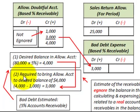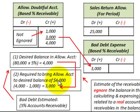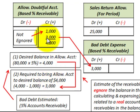Step two: determine what's required to bring the allowance account to the desired balance of $4,000. We take the desired $4,000 less the $1,000 already in the account, giving us $3,000 to add. So we credit the allowance for doubtful accounts by $3,000 — the contra account that reduces accounts receivable — and debit bad debt expense for $3,000. Again, bad debt expense is a contra account to sales, reducing our sales account.